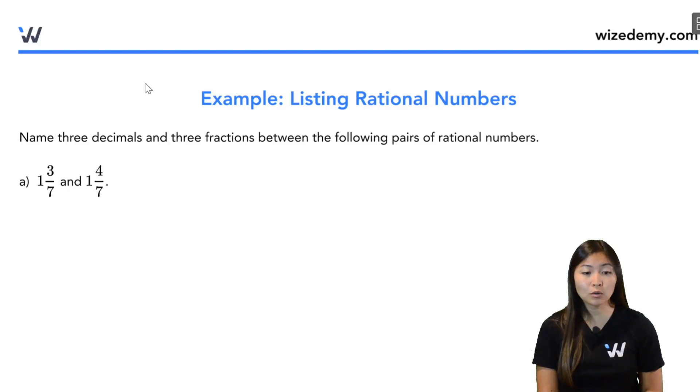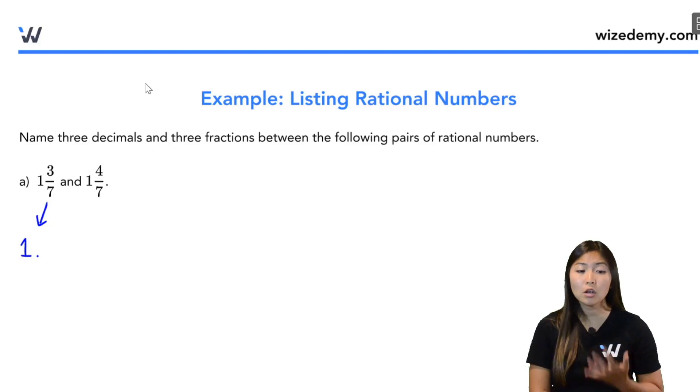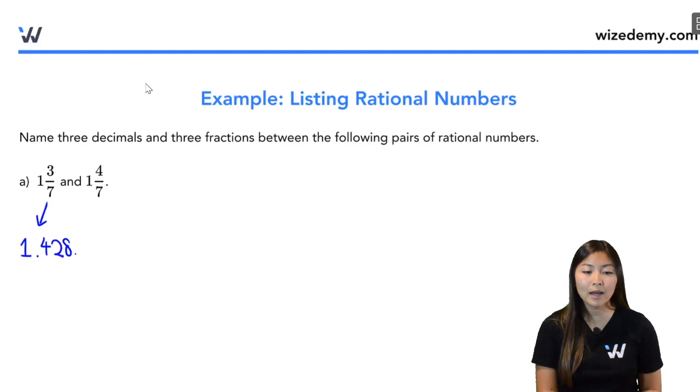So first thing we have to do is actually convert these two rational numbers or mixed numbers into decimals. So the first one is one and a bit, so it's one point something. And to find that decimal part, I'm going to take three and divide it by seven. You can either do that by hand using long division or use a calculator. So you should have gotten 1.428 something if you divided three and seven.